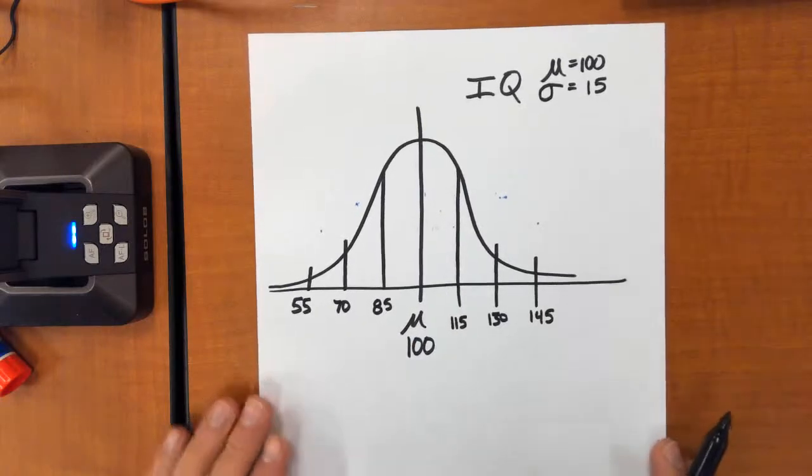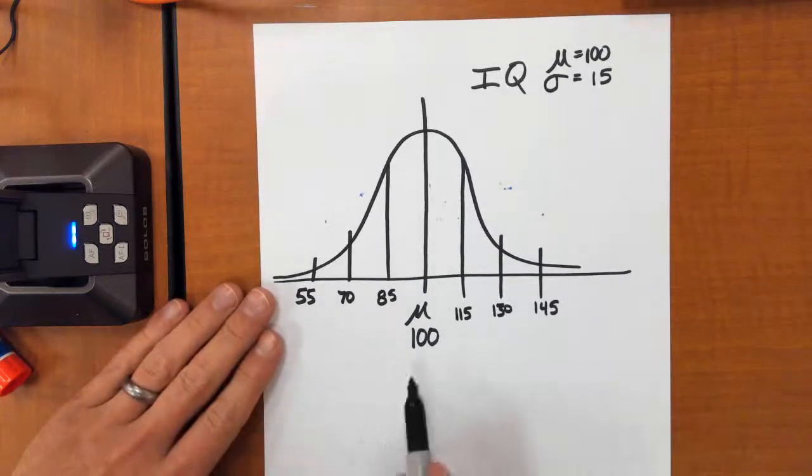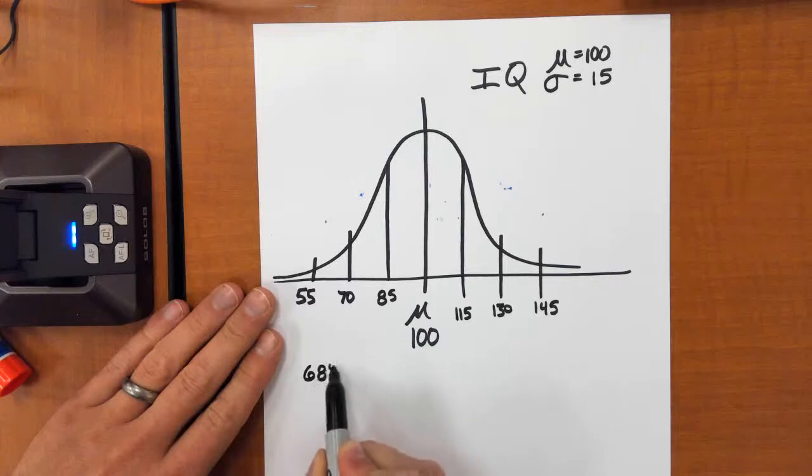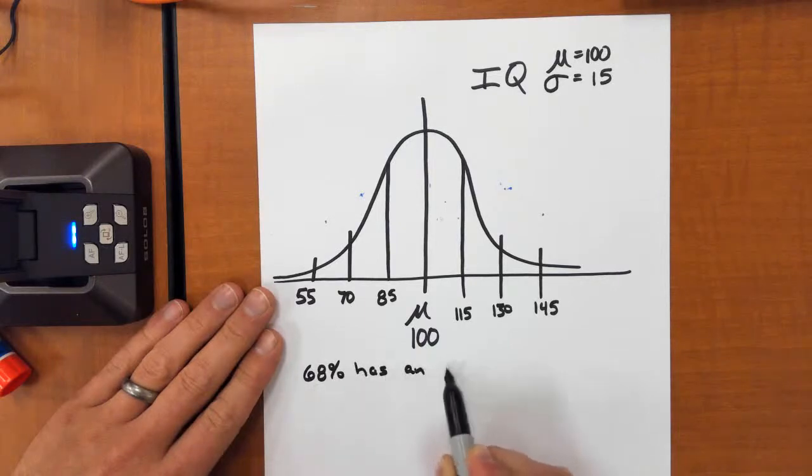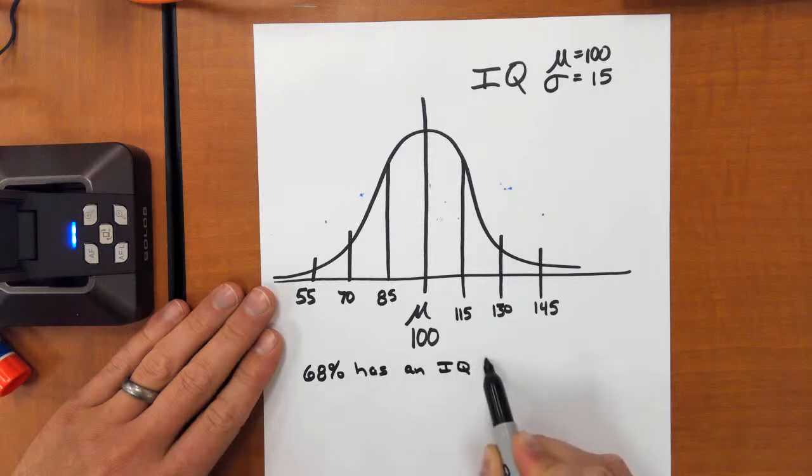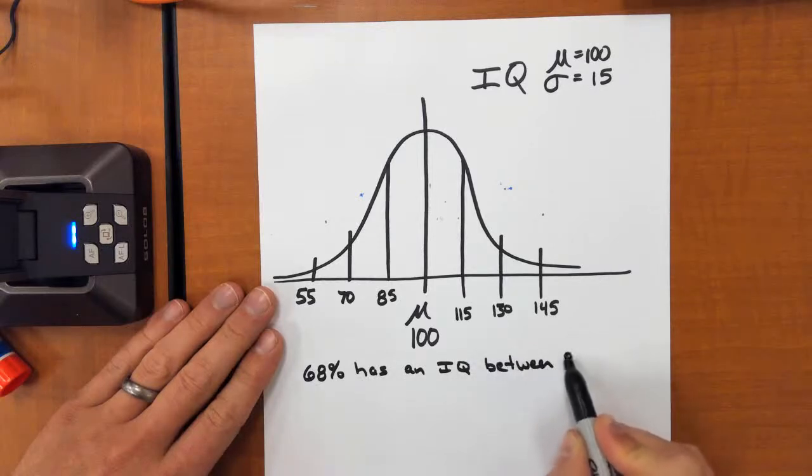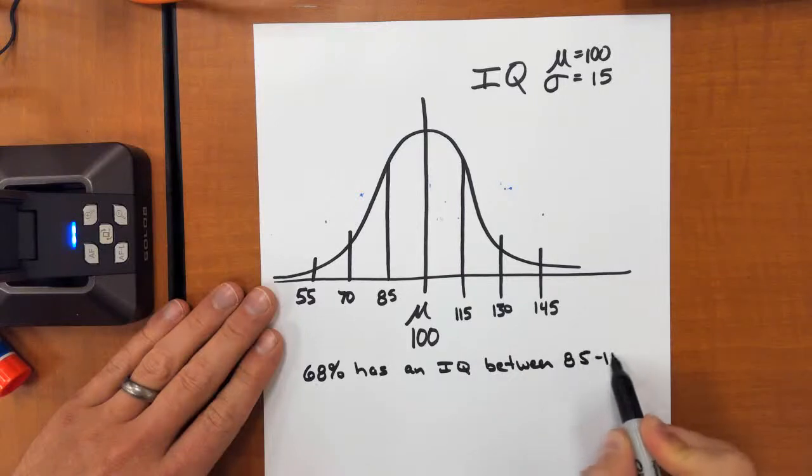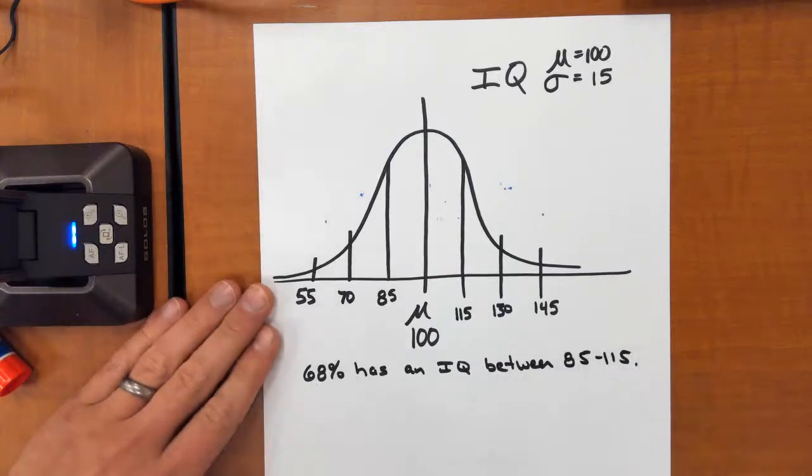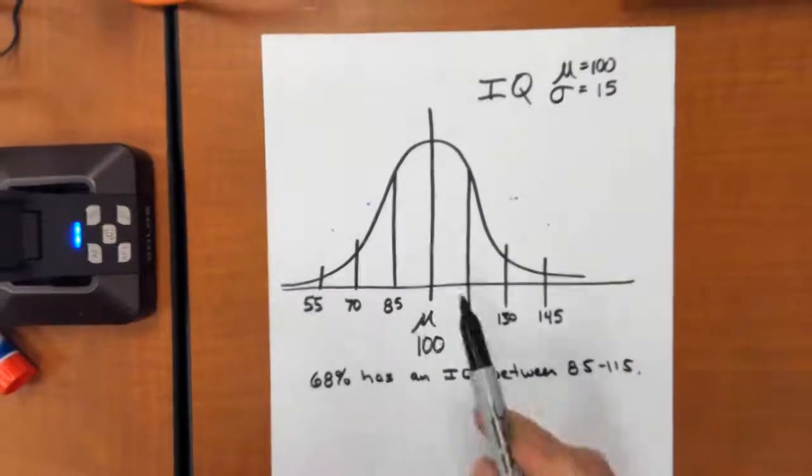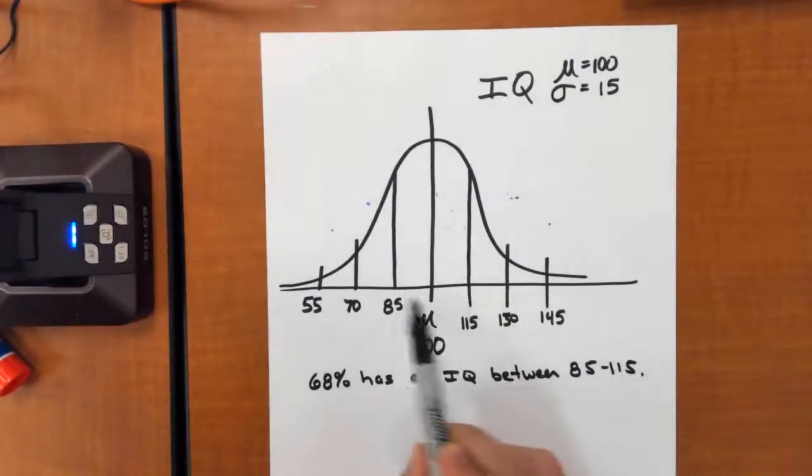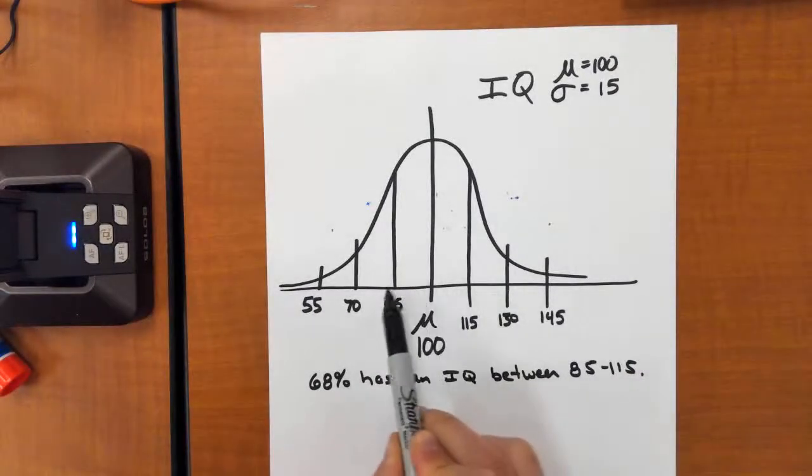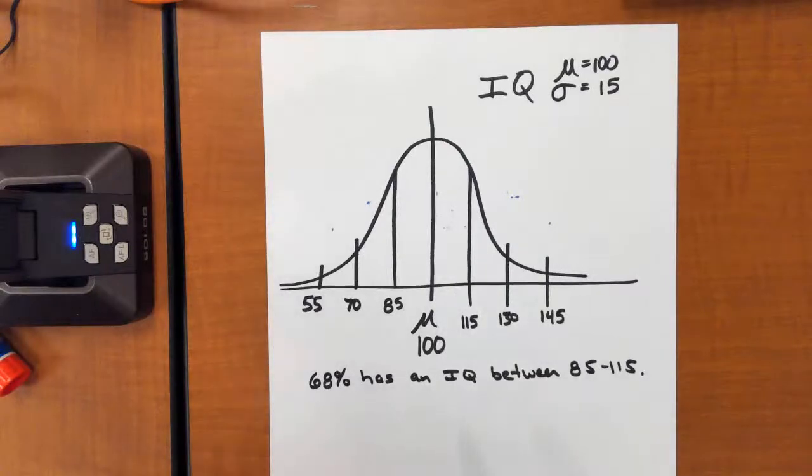So just a couple little summary points. We would say that 68% of the population has an IQ between 85 and 115. Because our rule tells us that within this first standard deviation, so one above, one below, we would capture 68% of the data.